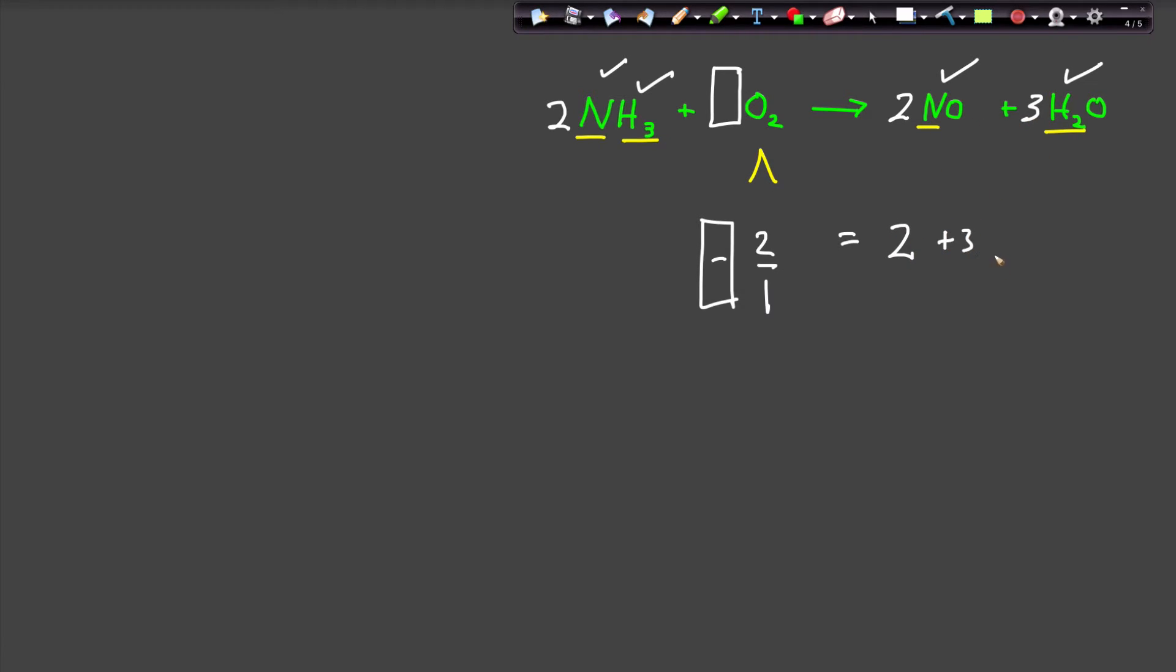And now I have my old situation where I have some fraction times two is equal to two oxygens plus three oxygen. So I've got to have some fraction is equal to five. And what do I need? I need a five to show up and a two to go away. So I'm going to put five halves there.